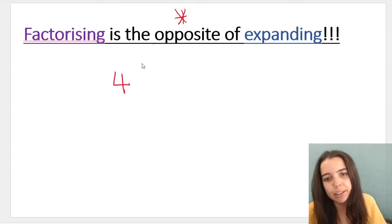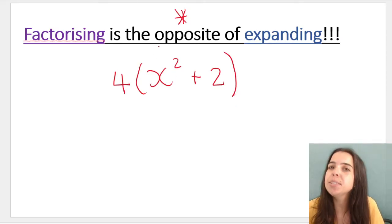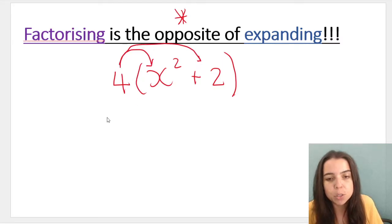If I give you something like this and I tell you to simplify that brackets or expand or multiply into the brackets or apply the distributive law, you'll say, okay cool, 4 is outside the brackets which means I can multiply the 4 into the brackets. 4 gets multiplied by x squared to give me 4x squared. 4 gets multiplied by the 2 to give me 8.